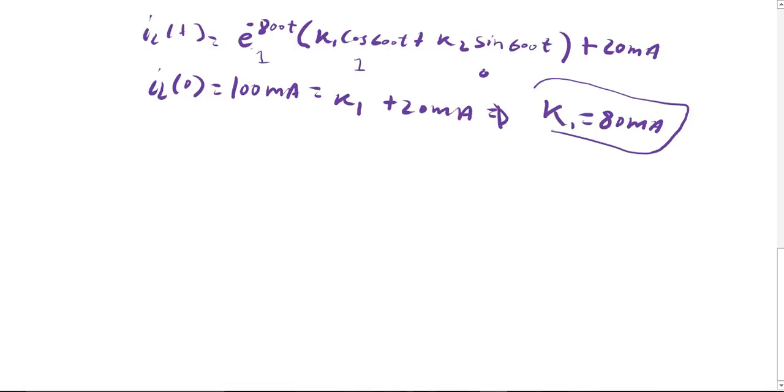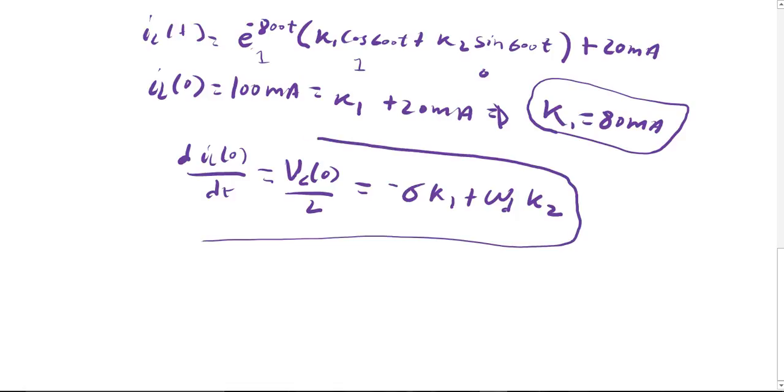All right, so now once you find k1 you solve for k2. The way you solve for k2 is by derivating IL of t. So dIL(t) over dt at t=0 is the same as VC(0) over L. And this is also a short way instead of derivating this whole equation, you can just use this formula. This is negative alpha k1 plus omega d k2. Whenever you have under-damped when you get to this part you can use this equation. So VC(0) is 50 over 4, and you have to convert this value into mA so times 1000.